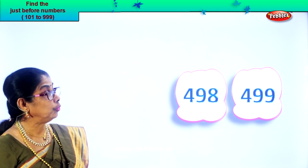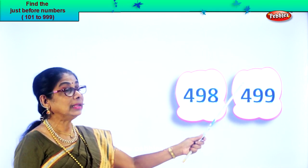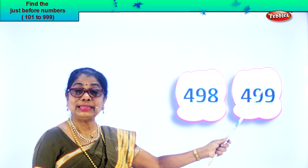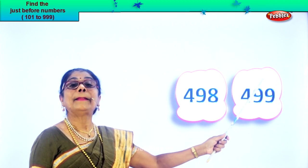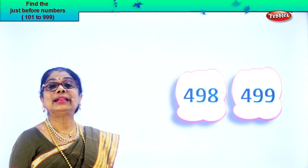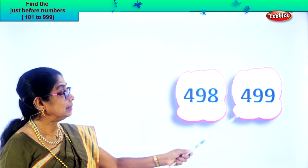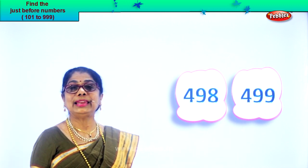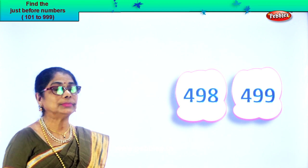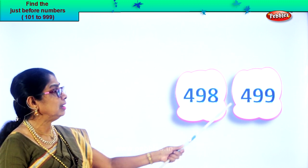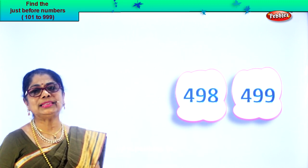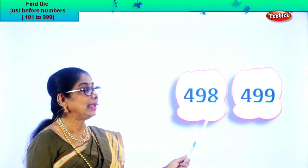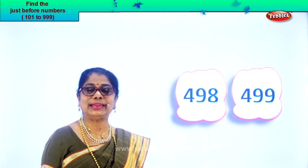All you have to do is look at the tens and ones place. If the ones place is sufficient, you look at just the ones place. Here, one less than nine is eight. So 498, 499. Let's take the next number.